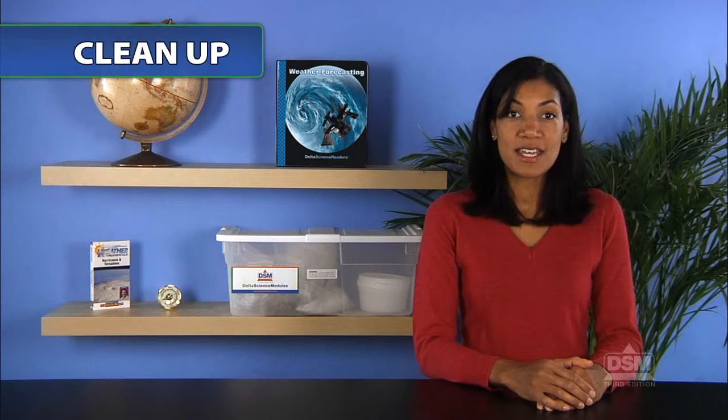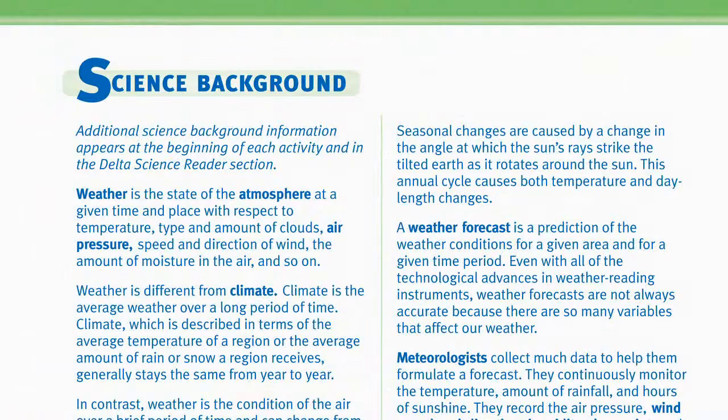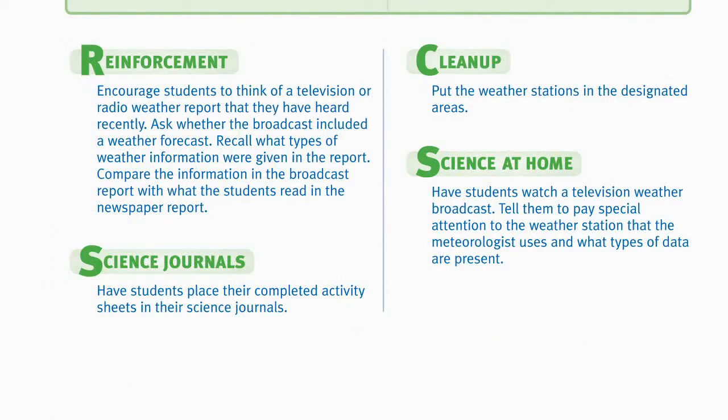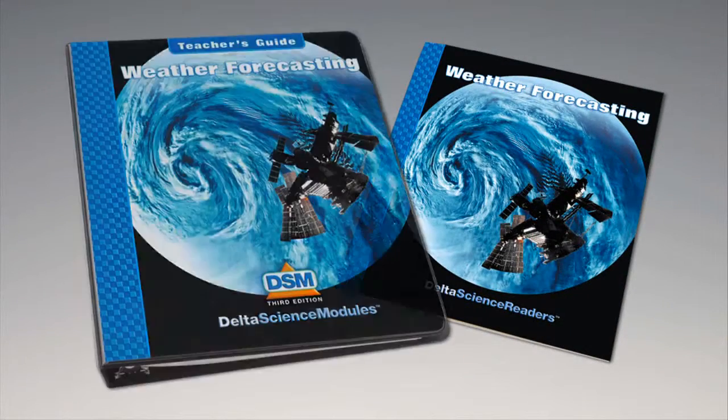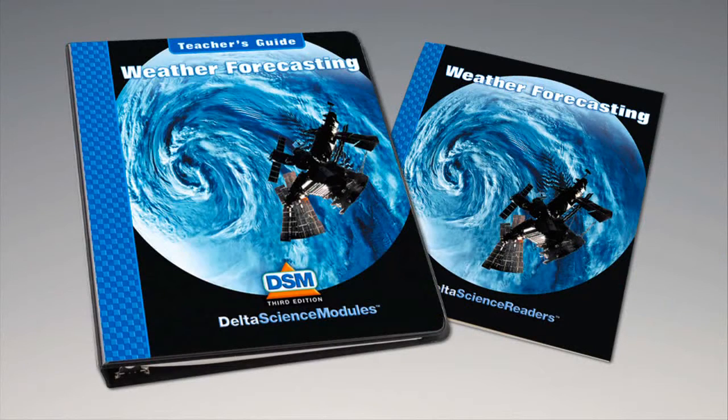Finally, lead a discussion comparing yesterday's forecast with today's actual weather. To conclude the activity, have students return their weather stations to the designated areas. For science background, reinforcement activities, curriculum connections, and information about the Delta Science Reader, please consult your DSM teacher's guide.